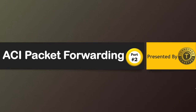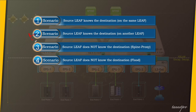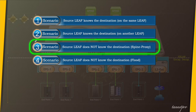Without wasting more time, let's get started. As you know, part one covered scenario one, and this entire series follows four scenarios. The first scenario is already completed — you can check it via the i-button. I originally said we'd cover scenario two next, but I decided scenario three is more important as it also helps you understand scenario two. So today our focus is scenario three: where the source leaf does not know the destination — that is, the spine proxy.